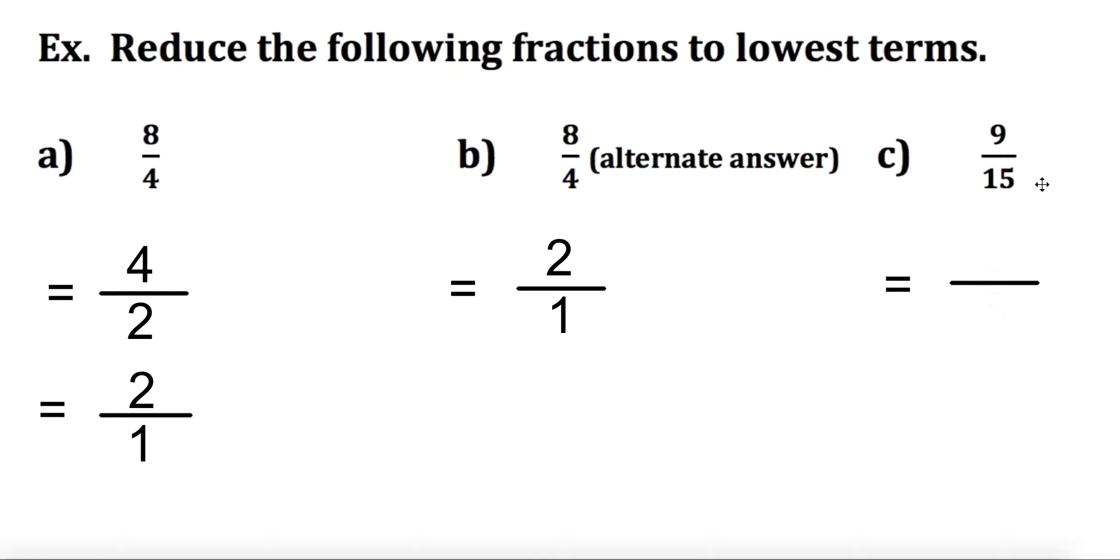Looking at the next question, we have 9 and 15. We need to find numbers that both of these are divisible by. Sometimes it's helpful to have a multiplication chart handy if you're just getting used to this at the start. Both of these are divisible by 3, so we get 3 over 5.